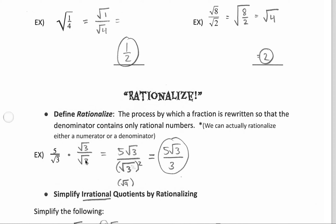In fraction math, we're not just allowed to do something to either the top or the bottom — we have to do it to both top and bottom in order to stay balanced. Multiplying by this value is really multiplying by 1, so we're not changing the value, but in doing so we're able to move that square root from the bottom to the top. On the bottom we have the square root of 3 squared — squaring a square root undoes that radical and we're left with 3 in the denominator. But on top we have 5 times the square root of 3, and we can't simplify that. So the square root of 3 got moved to the top and the radical disappeared from the bottom.